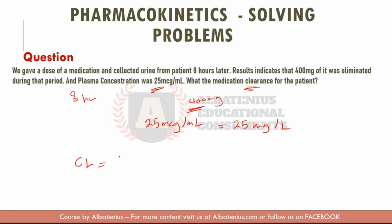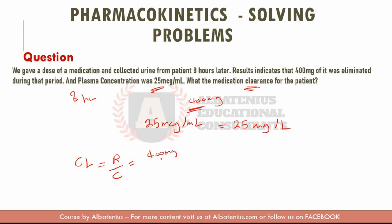So what is the rate of elimination? There was 400 milligrams eliminated during eight hours. Rate is amount per time — like eating one gram per eight hours, that's a rate. So the rate of elimination is 400 milligrams per eight hours.